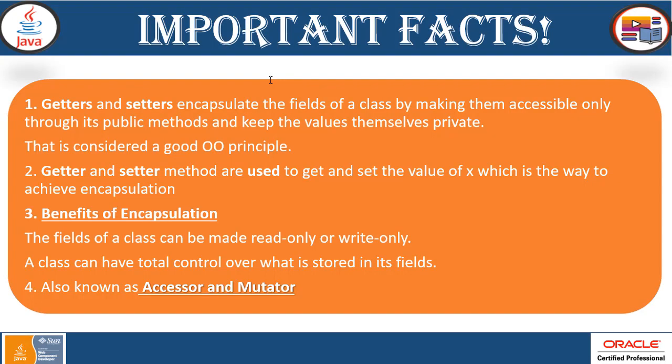Important facts: Getters and setters encapsulate the fields of a class by making them accessible only through its public methods, keeping the values themselves private — this is considered a good object-oriented principle. Getter and setter methods are used to get and set values, which is the way to achieve encapsulation. Benefits of encapsulation: the fields of a class can be made read-only or write-only; a class can have total control over what is stored in its fields. Getters and setters are also known as accessors and mutators. Use these features efficiently when you have a large and sensitive application with confidential information to protect.